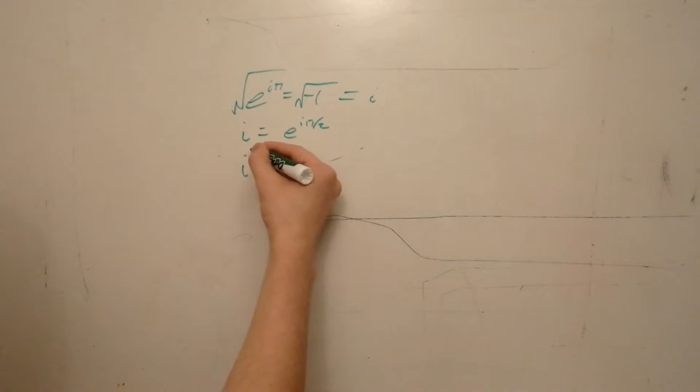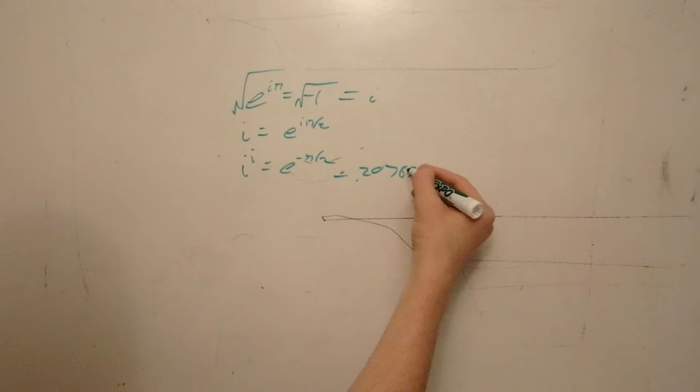Same thing here. We can take these both to the i power. That gives us minus pi halves, which is equal to 0.20787957. It's such a gorgeous number. I have it memorized.